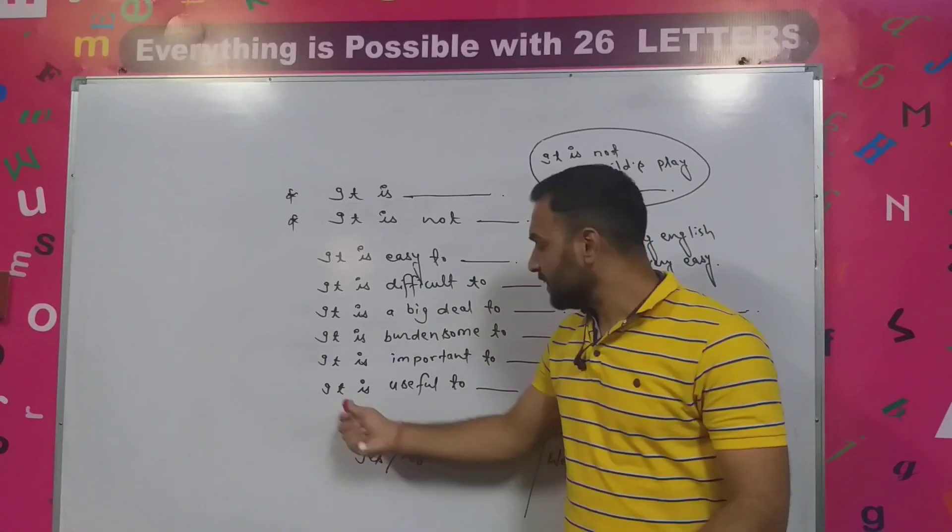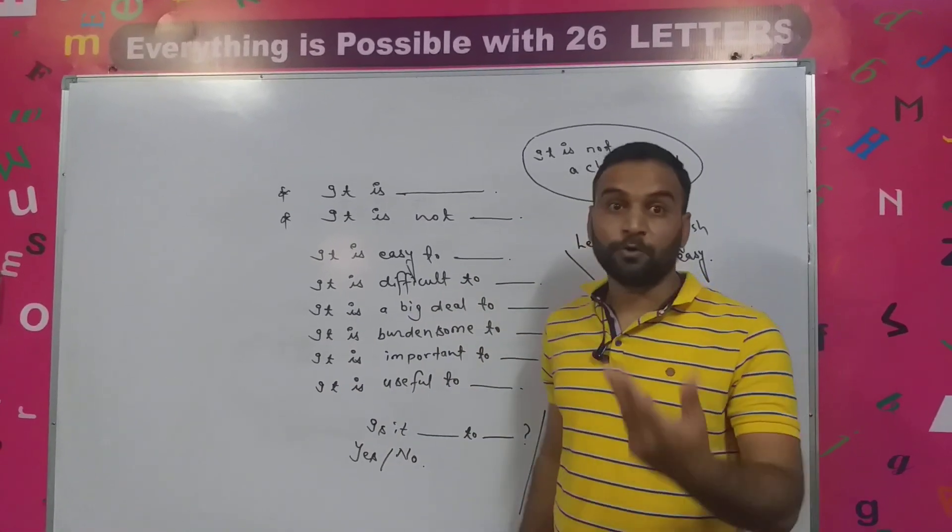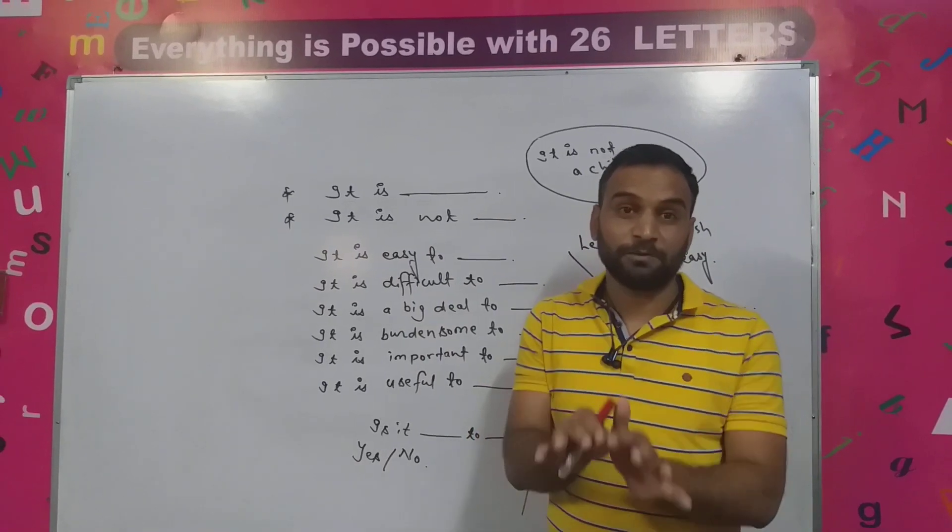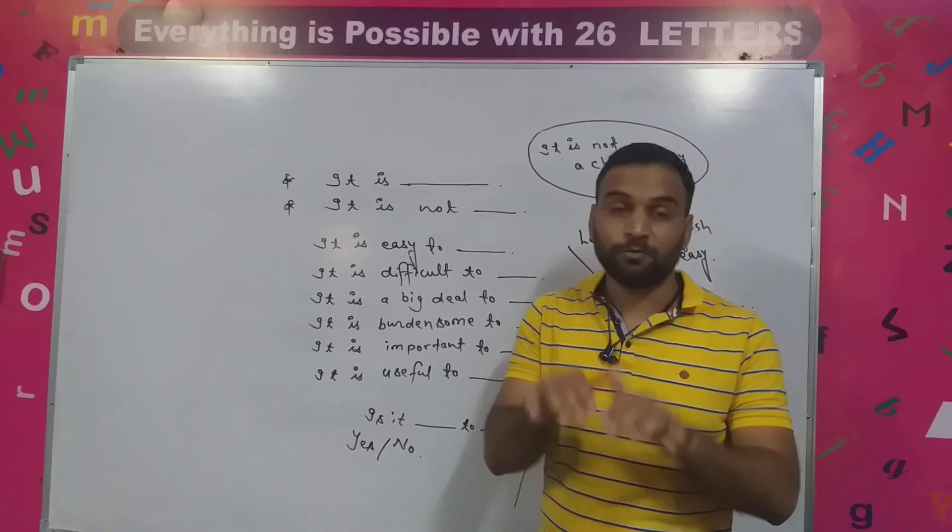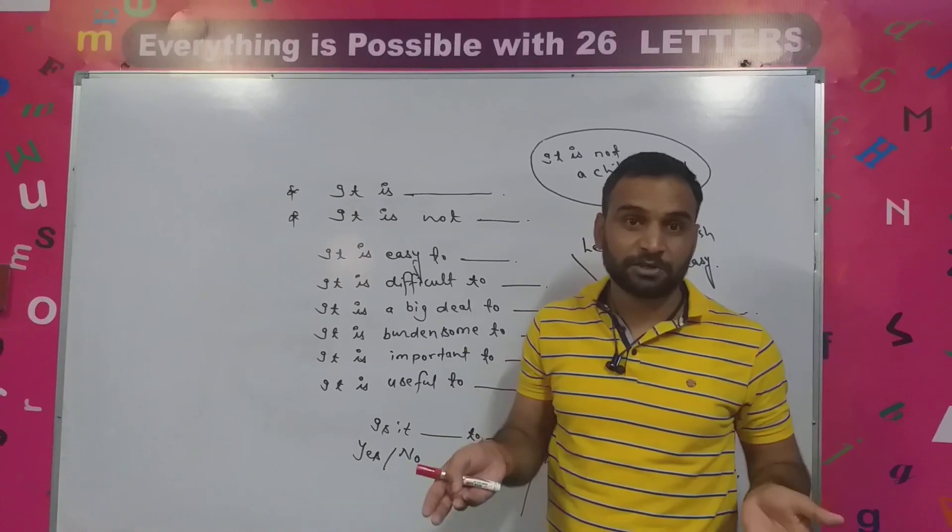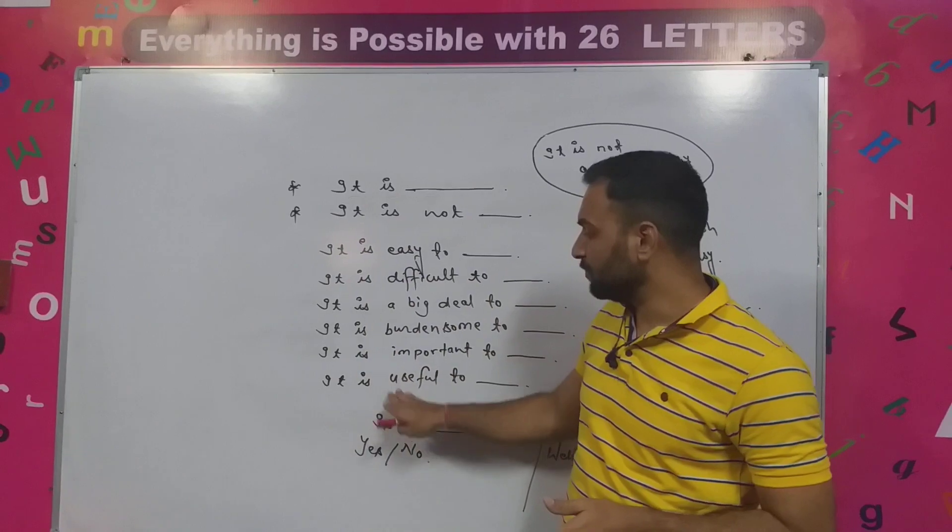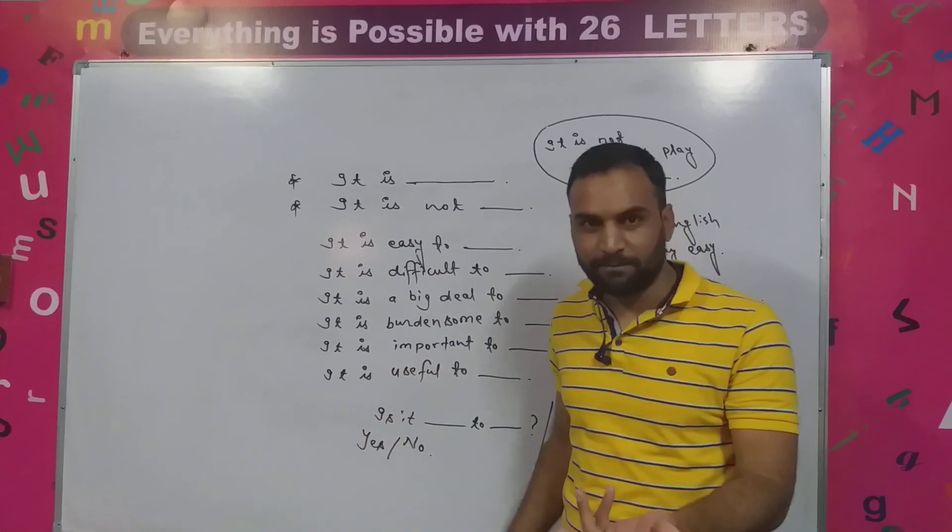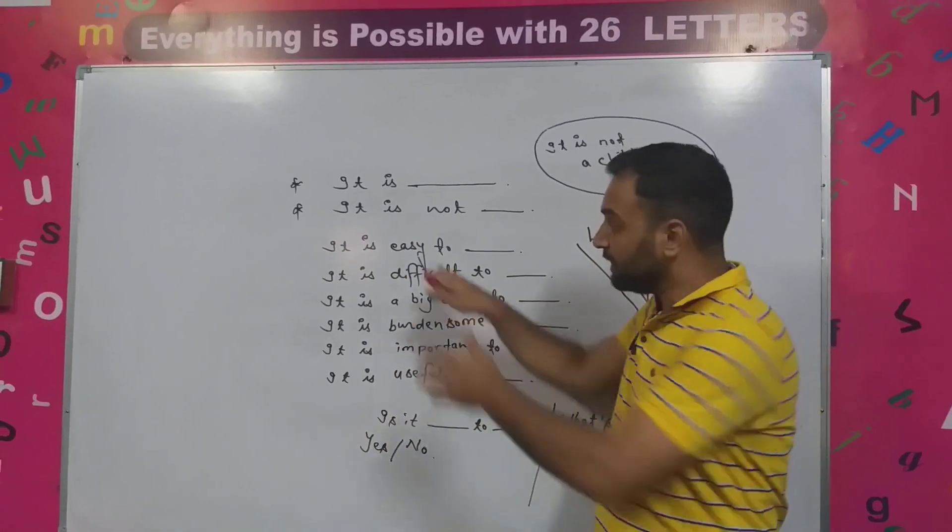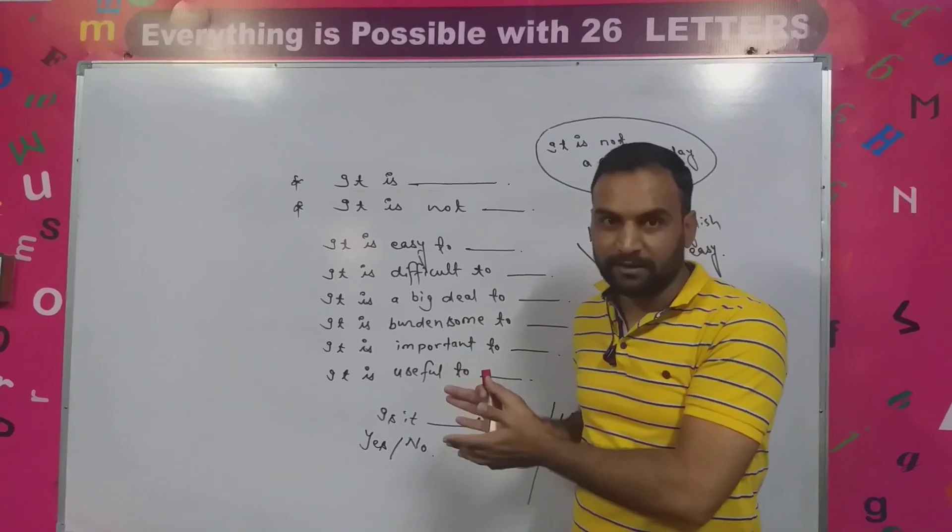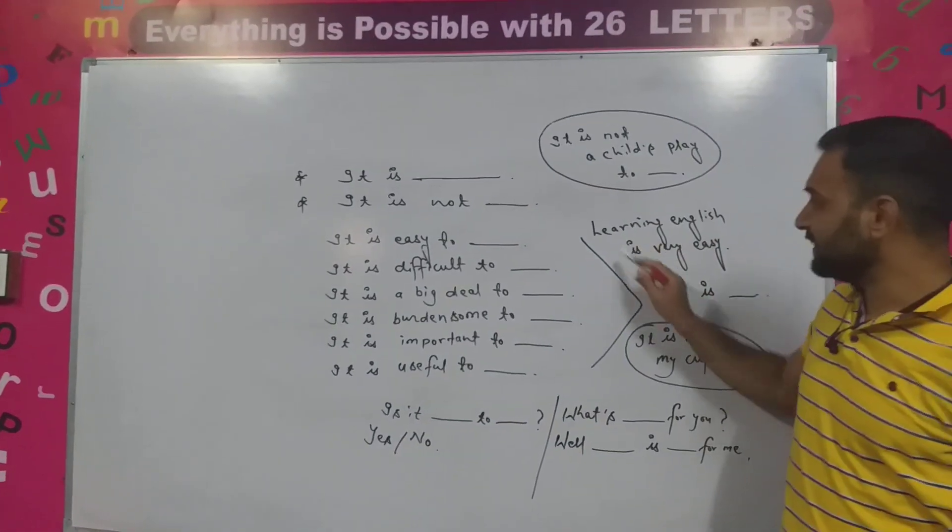Now for things which are useful for us: it is useful to. It's useful to read newspaper. It is useful to watch news channels. It is useful to learn English. It is useful to do homework. Like that. And if it's negative, then 'not useful' or you can also use 'useless': it's useless to. This is the proper way of saying it.